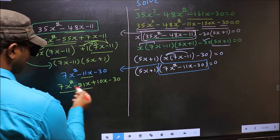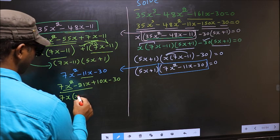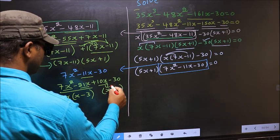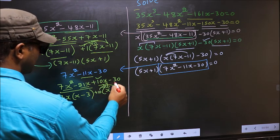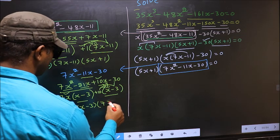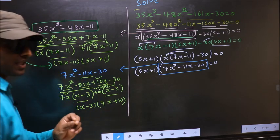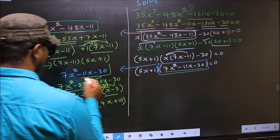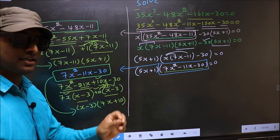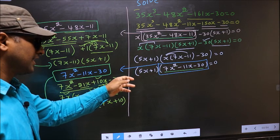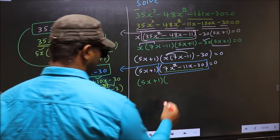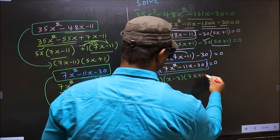What can be taken out common from the first two terms is 7x, giving 7x times (x minus 3). The remaining bracket must also be (x minus 3), so outside you get plus 10. Take out (x minus 3) as common, giving (x minus 3)(7x plus 10). In place of this quadratic we write (x minus 3)(7x plus 10), so the equation becomes (5x plus 1)(x minus 3)(7x plus 10) equal to 0.